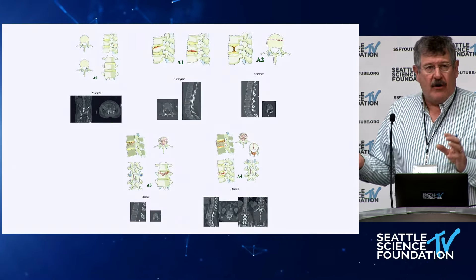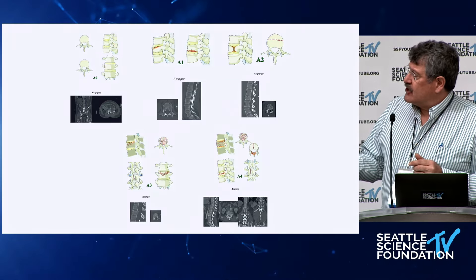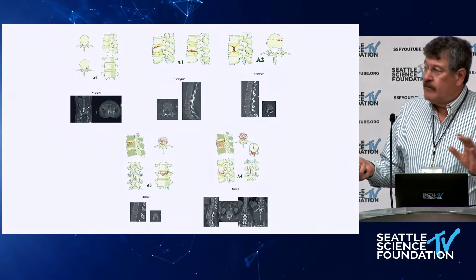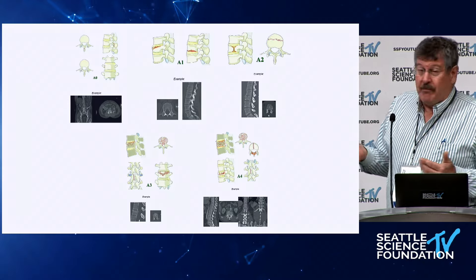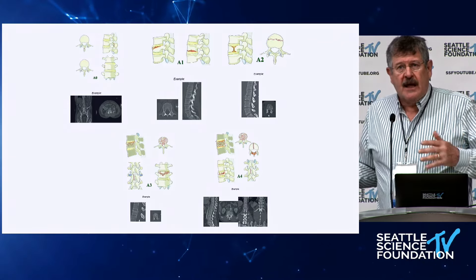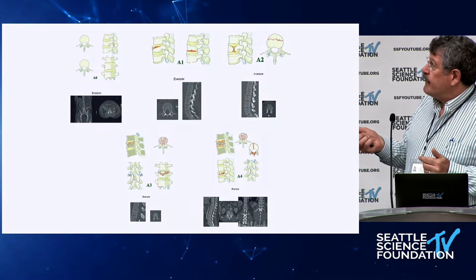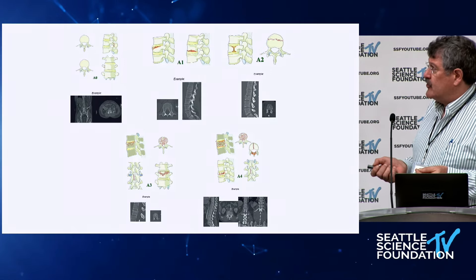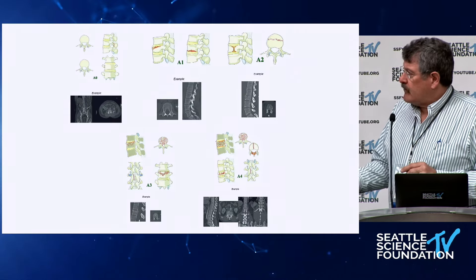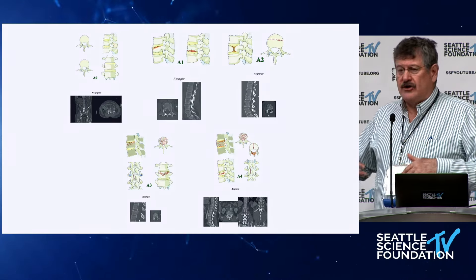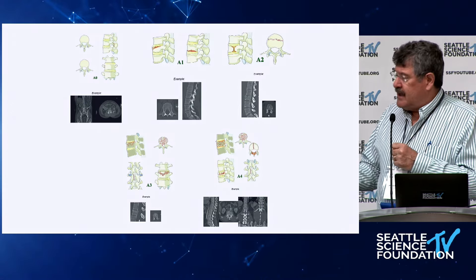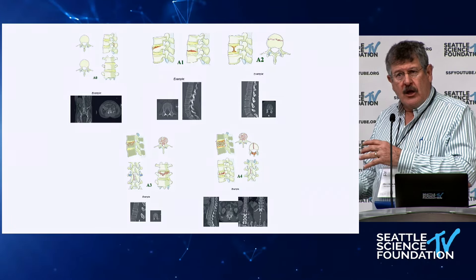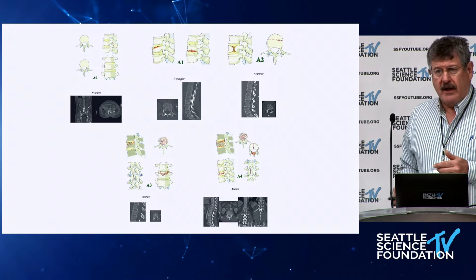Type A injuries are very simple. A0 includes isolated transverse process and spinous process fractures. A1 is a compression fracture — it doesn't matter whether it's superior or inferior, that makes no difference in treatment or decision-making, so they got rid of all the subgroups. A2 is a pincer fracture with a coronal split. A3 and A4 are burst fractures: A3 involves only the superior end plate; A4 involves both superior and inferior end plates. A4s may be better treated with some anterior column support — maybe done anteriorly or front-and-back — though we don't have that answer yet.